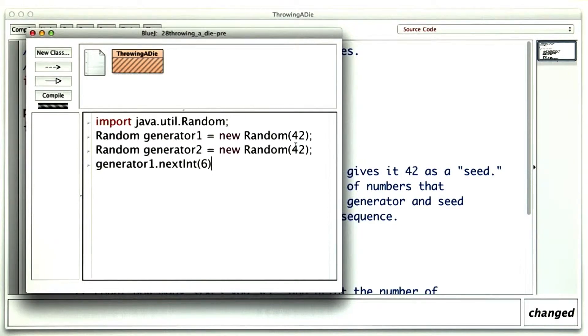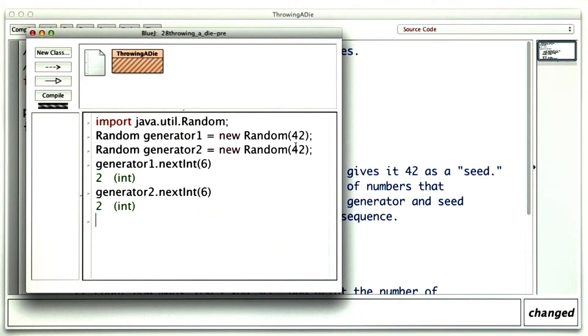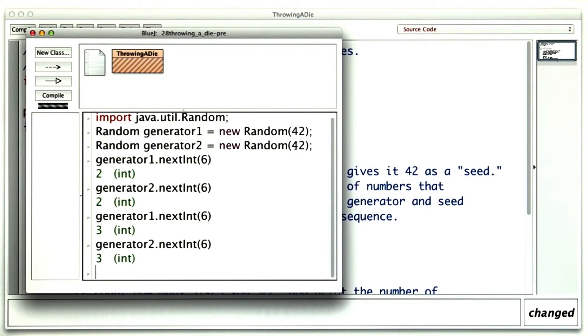Now if I ask the first generator for an int, I'll get 2. And if I ask the other generator for exactly the same thing, I will also get 2. I can do this again, and they still both agree.